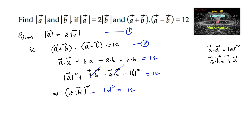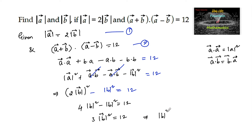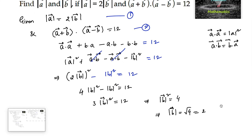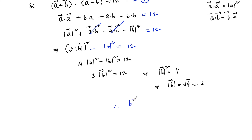So it is 4 times mod b squared minus mod b squared is equal to 12, that is 3 times mod b squared is equal to 12. So mod b squared is equal to 12 upon 3, that is 4. Since mod b is the length of the vector we consider the positive square root, so mod b is equal to 2.